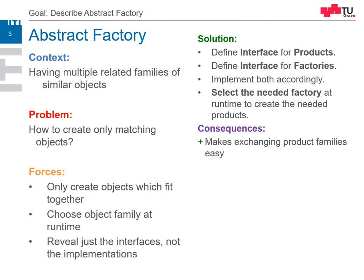So what are the consequences? Exchanging product families is easy now — we can decide at runtime that we want to use the other family. Products get consistent: they have similar behavior, similar properties, and so on. And we only depend upon the interface of the products, not their actual implementation anymore.